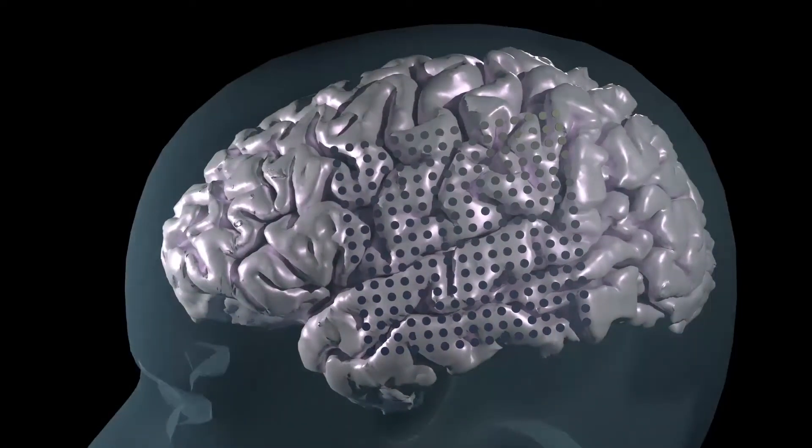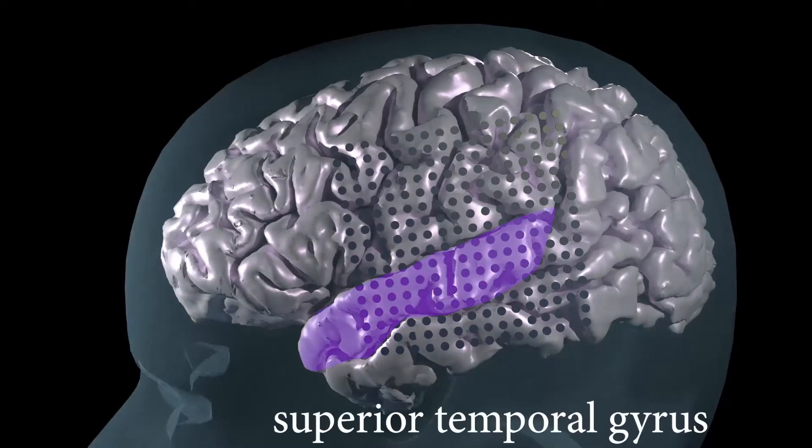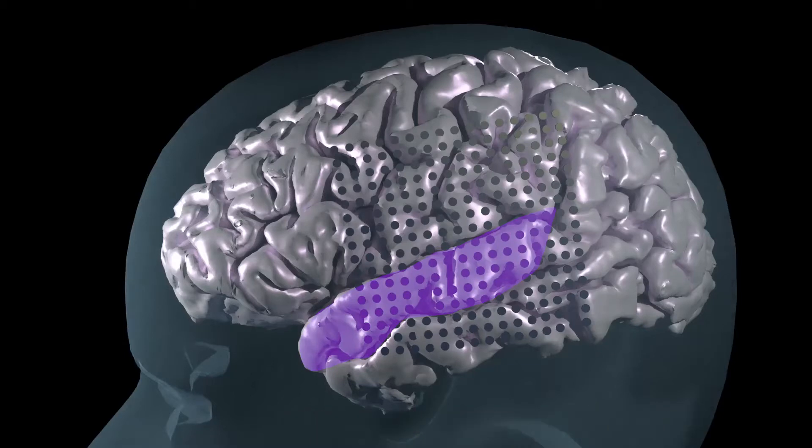Our previous work showed that in the human superior temporal gyrus, which is one of the main brain areas for speech perception, there were electrodes that responded specifically to certain types of phonemes. However, when we looked for a map of phonemes across the brain's surface, we weren't able to find anything that was consistent across subjects. So, what if we just weren't choosing the right features? Could we instead have the brain tell us exactly what features it cares about?